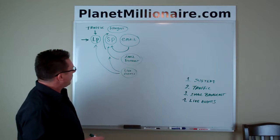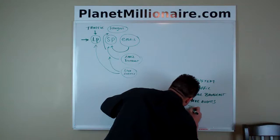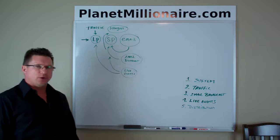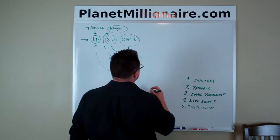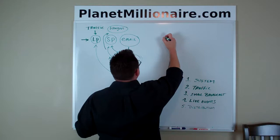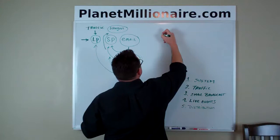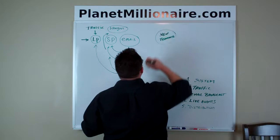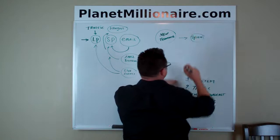Those are four steps: system, traffic, email broadcast, live events. There's one more. Your distribution network. Expanding your distribution — always expanding it. Somebody goes through this system, becomes a prospect, and says 'I want to do this' — a brand new teammate. What do we do? We give them the system. They have the same system that we use. This is how you duplicate and replicate, how you get distribution by teaching distribution. Not only are you growing your own network, you're teaching the next person to do the same.